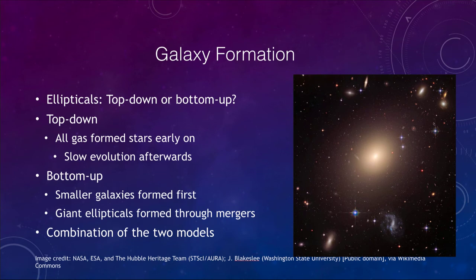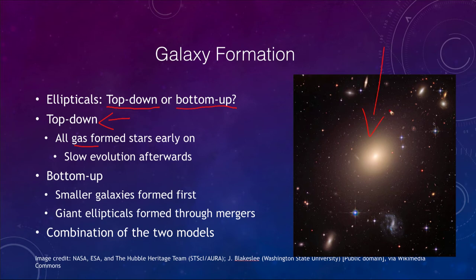First, looking at how galaxies formed. There are two different ways we can think about this: top-down or bottom-up. A top-down method says that all gas formed the stars very early on in the history of the elliptical galaxy - we see an example of one here - and then it was just slow evolution afterwards with minor changes. Or we could have bottom-up formation, which means that smaller galaxies formed first and giant ellipticals formed through mergers.